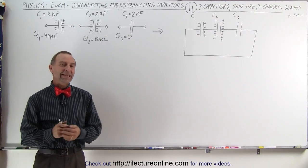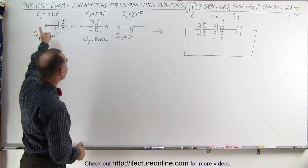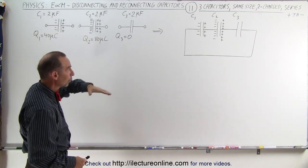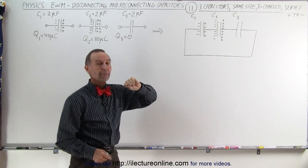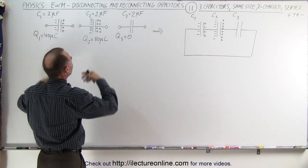Welcome to ElectronLine. In this example we still have three capacitors. They're the same size again. We are going to connect them in series, but the difference now is that two of them are charged instead of only one of them.